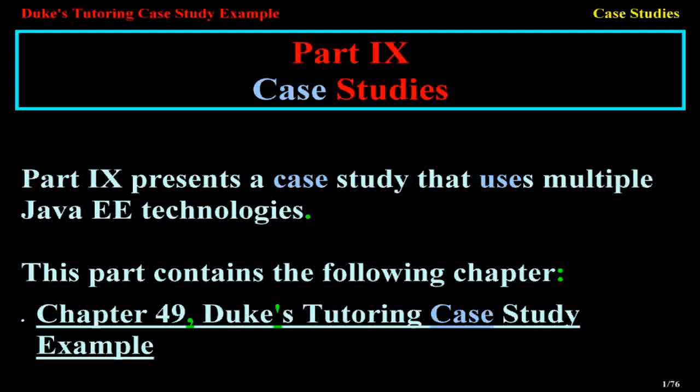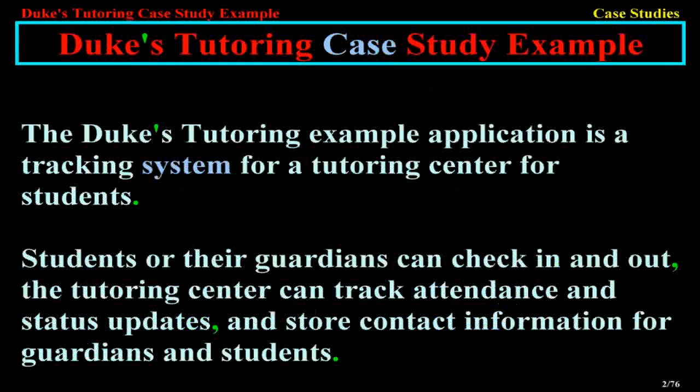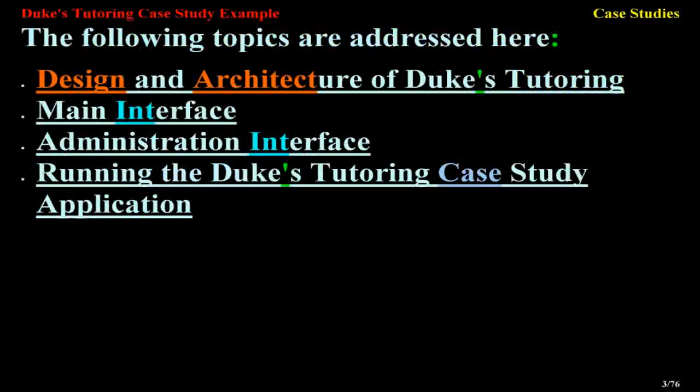Part 9 presents a case study that uses multiple Java EE technologies. This part contains Chapter 49, the Duke's Tutoring Case Study Example. The Duke's Tutoring Example application is a tracking system for a tutoring center for students. Students or guardians can check in and out. The tutoring center can track attendance, status updates, and store contact information for guardians and students. The following topics are addressed: Design and Architecture of Duke's Tutoring, Main Interface, Administration Interface, and Running the Duke's Tutoring Case Study Application.